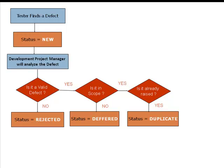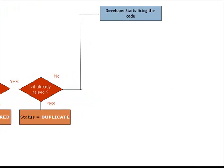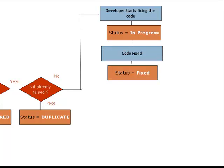If no duplicate is found, the defect is assigned to a developer who starts fixing the code. During this stage, the defect is assigned a status: In Progress. Once the code is fixed, the defect is assigned a status: Fixed.